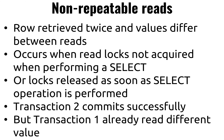The other one is the non-repeatable read, where transaction one reads a particular user, transaction two makes a change to that data — changing the age from 20 to 21 — and it commits, meaning this change was made permanent. Later on, transaction one assumes that two reads are going to be the same: I read it before and it was 20, and I read it again assuming it was still 20. If my logic assumes the data has not changed, and I have no way to guarantee that no one's changing the data under me, I risk a non-repeatable read.